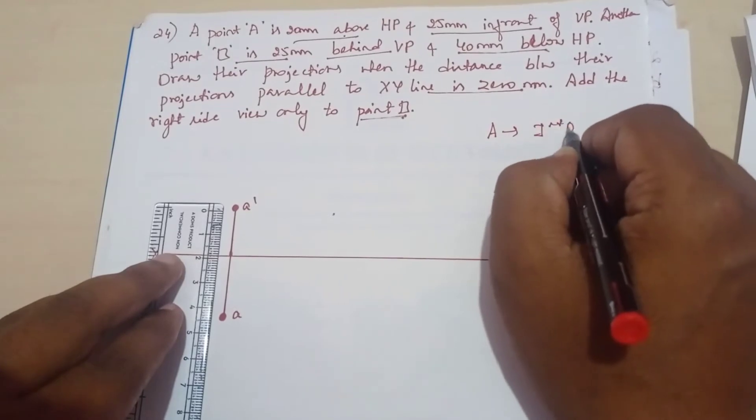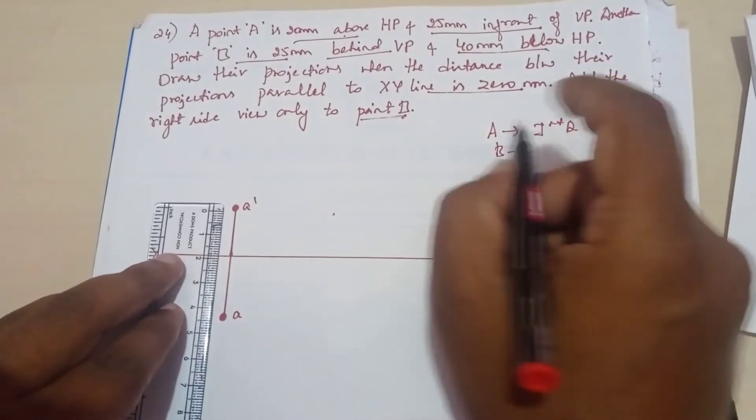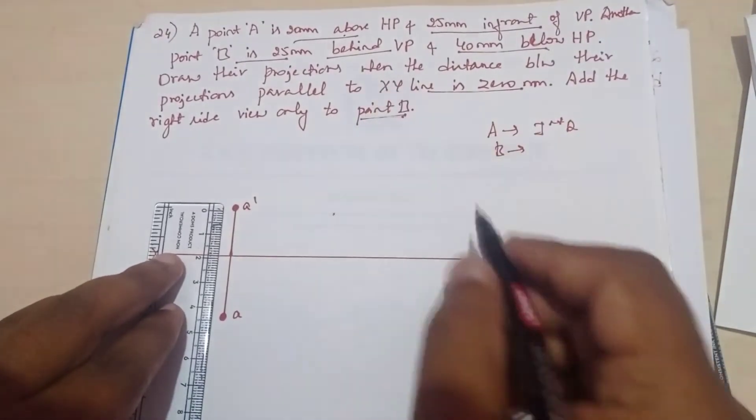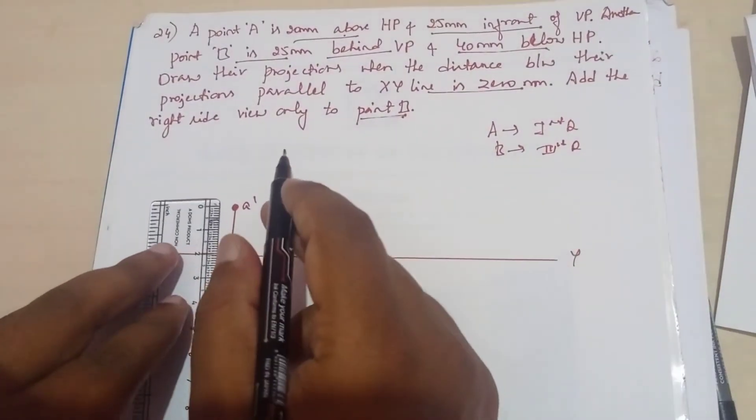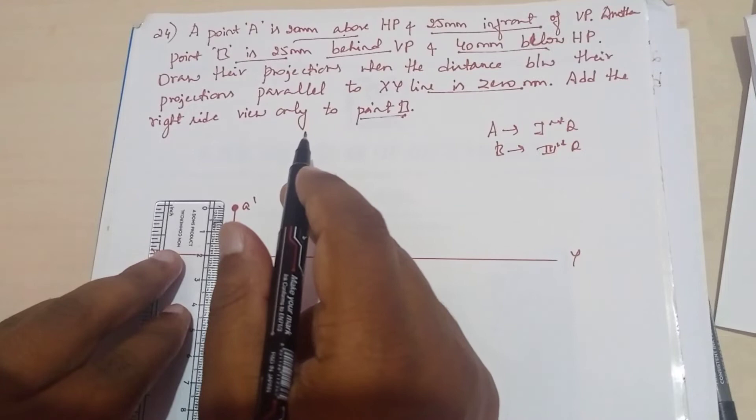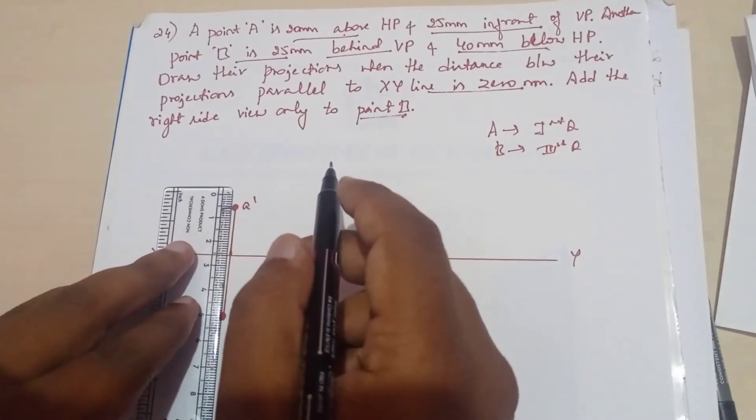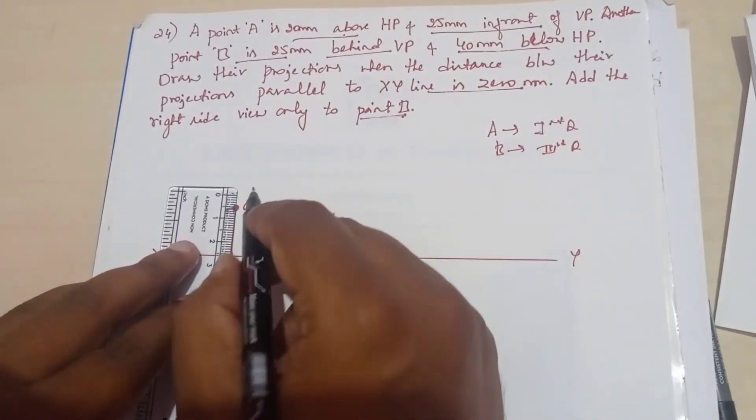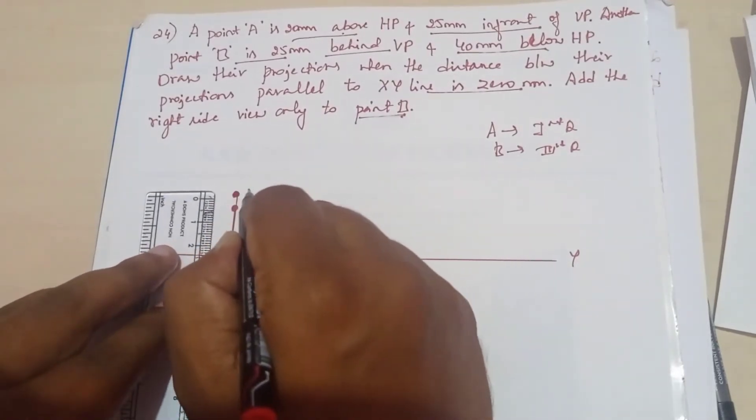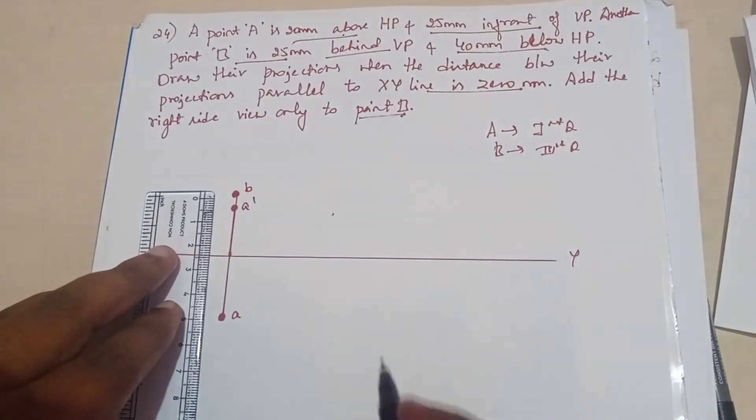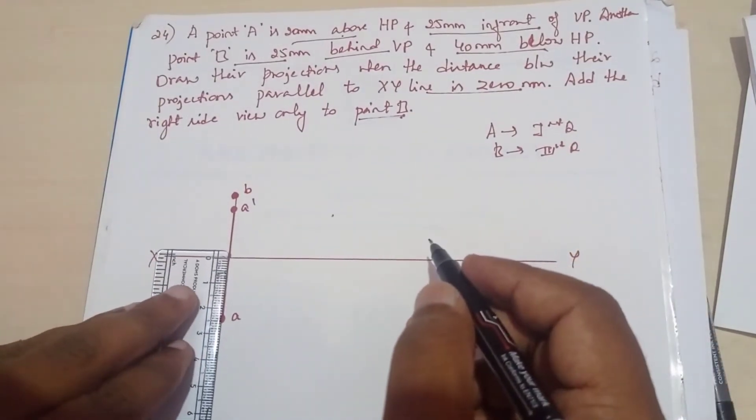A is lying in first quadrant and B, you can see, behind of VP and below HP means it is in the third quadrant. So behind 25 mm behind of VP means it is a top view, we are getting above the XY line in the third quadrant. Now 40 mm below HP - below HP means it is the front view.